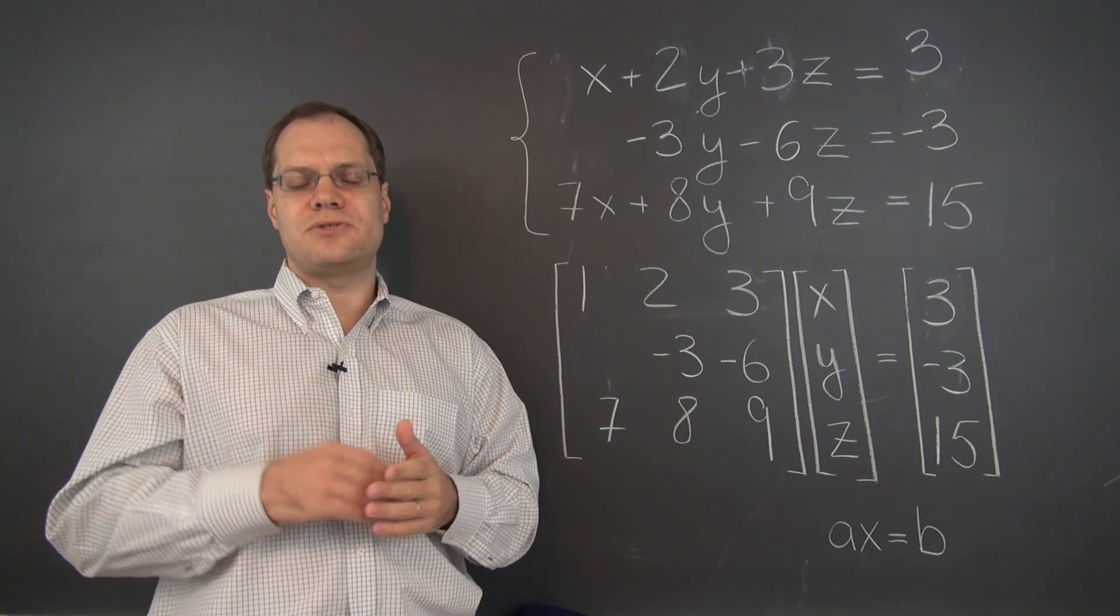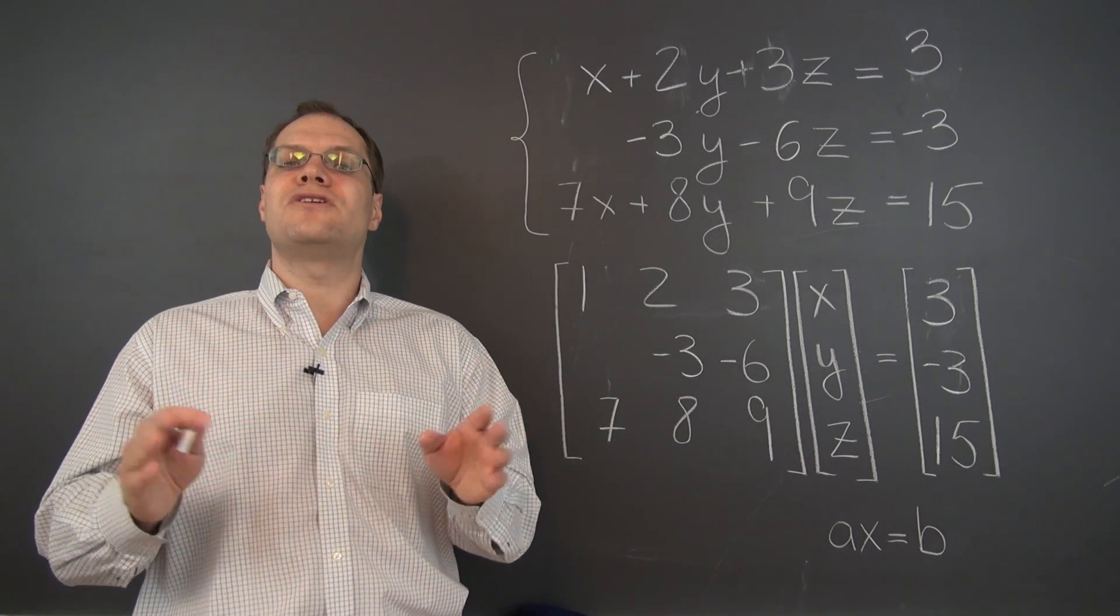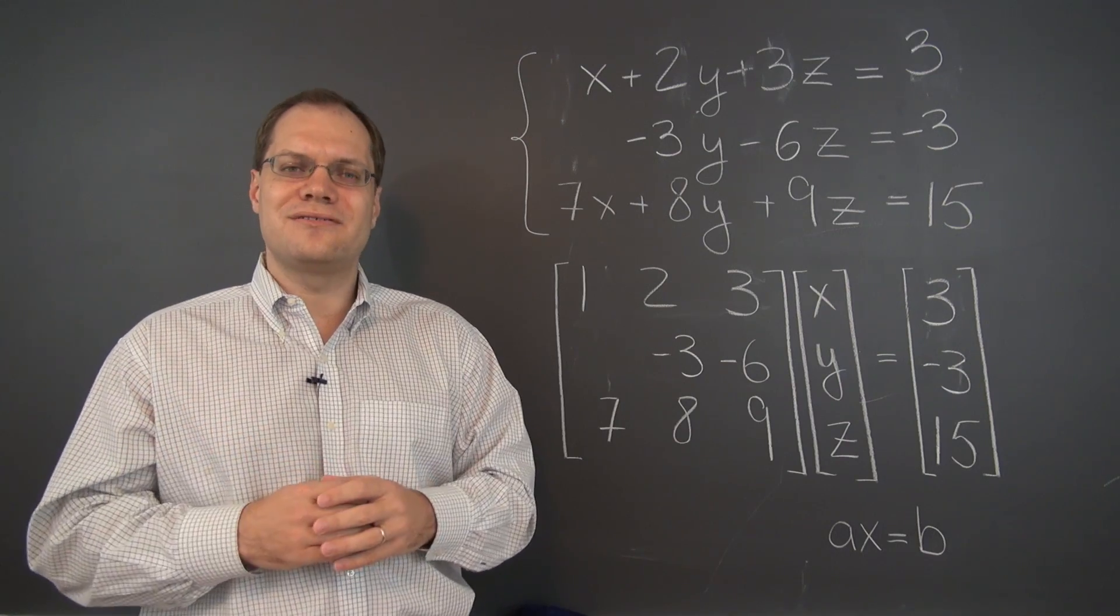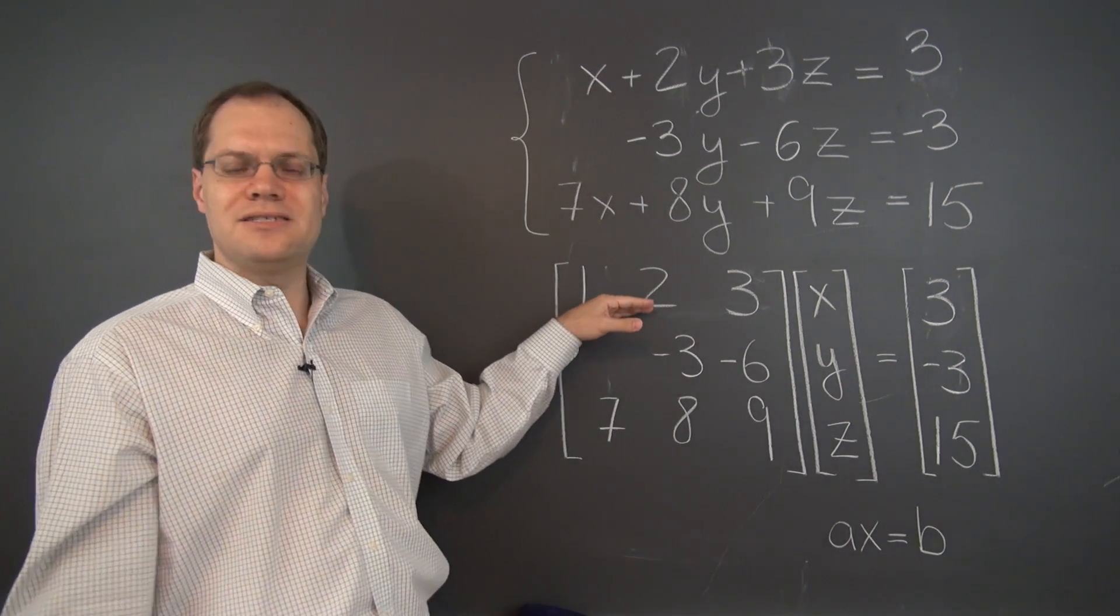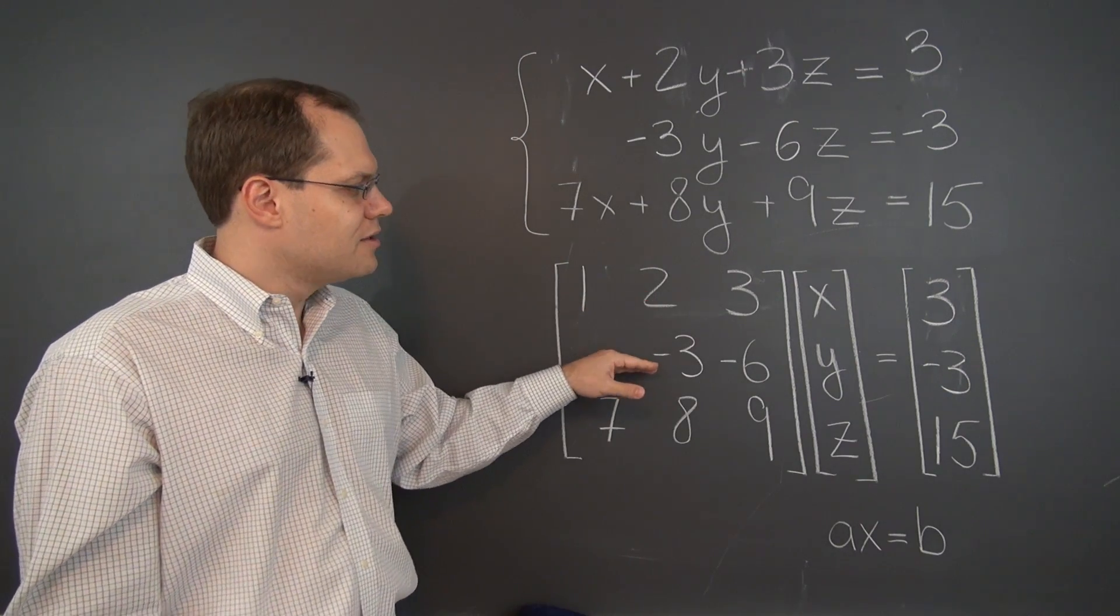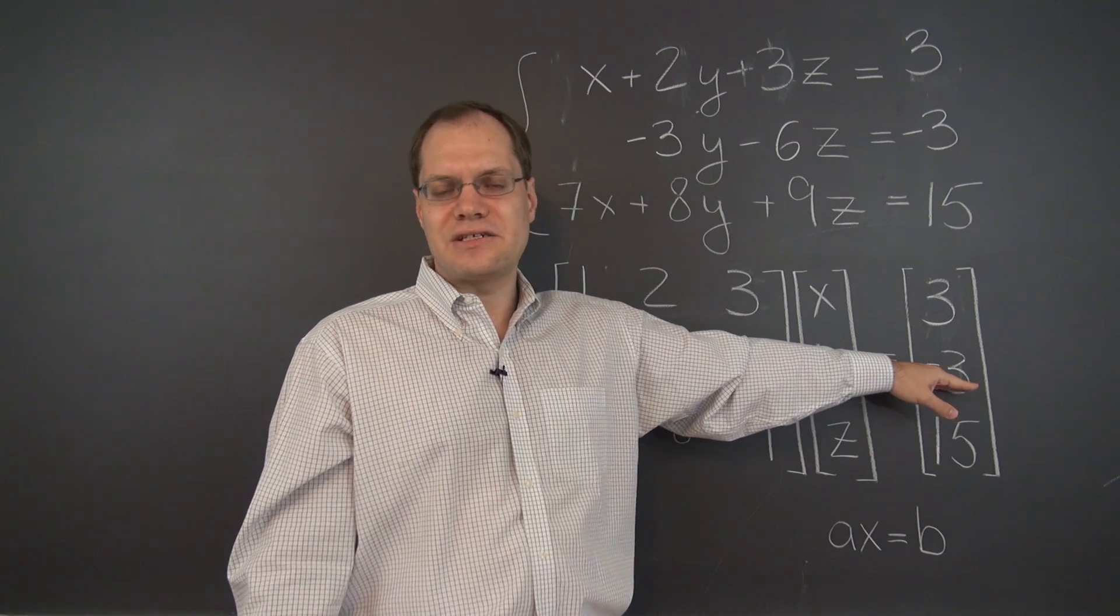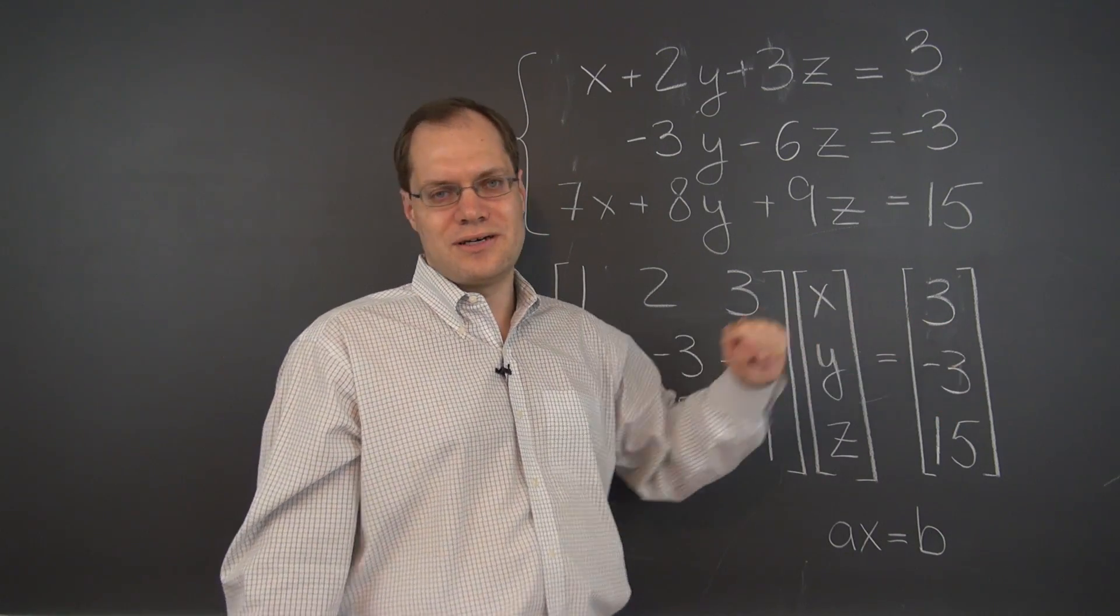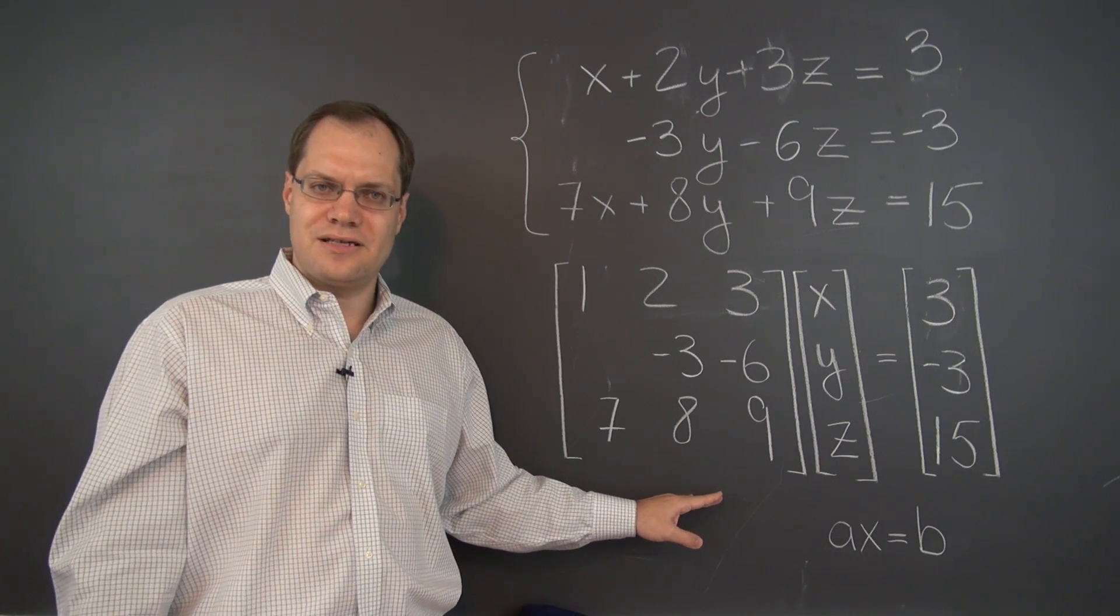So adding a multiple of one row to another. And just remember to keep doing the same thing to the vector on the right hand side as well. Okay, so that's the primary operation of Gaussian elimination.